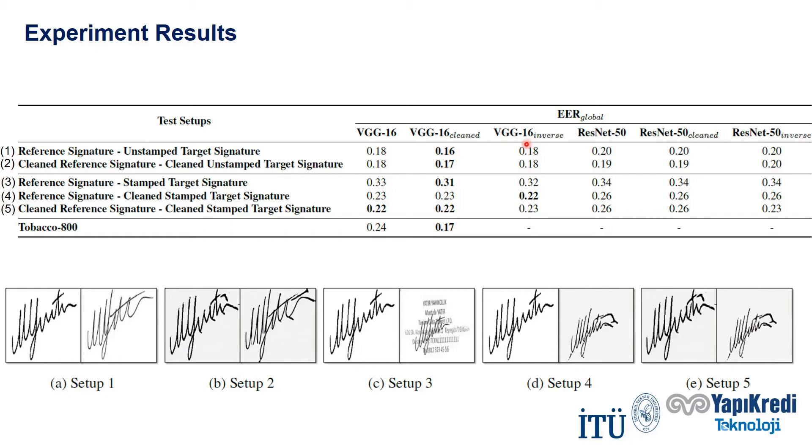In setup 1, we see the easiest setup, which resembles controlled signature verification environment. In setup 2, we applied cleaning and error rates stayed the same with first setup. This is expected because signatures are already unstamped, therefore don't need cleaning. But it shows that CycleGAN artifacts don't hurt the performance.